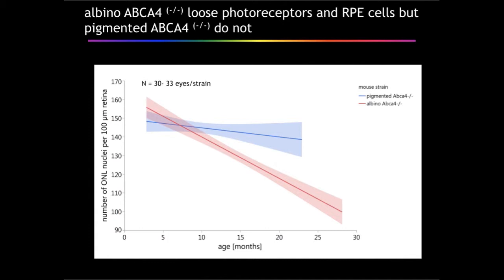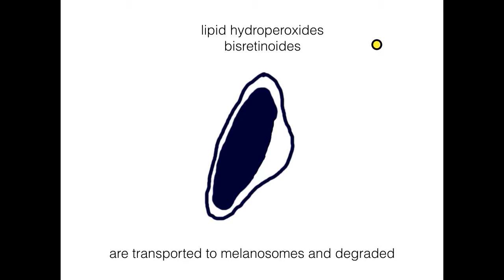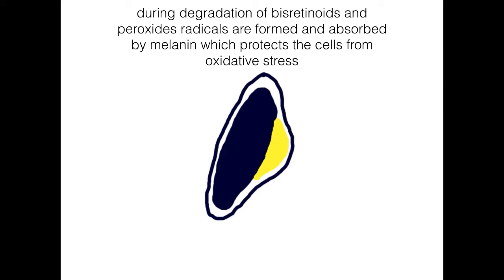What may be the mechanism? Melanosomes are lysosomes, and in melanosomes all lysosomal enzymes are present to degrade lipids, proteins, and so on. Therefore, it is not surprising that lipid hydroperoxides and bisretinoids are transported into the melanosomes and can be degraded there. During degradation of bisretinoids and peroxides, radicals are formed and absorbed by melanin, which protects the cells from oxidative stress.